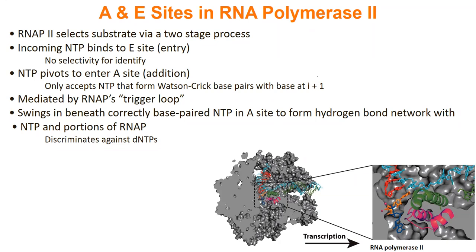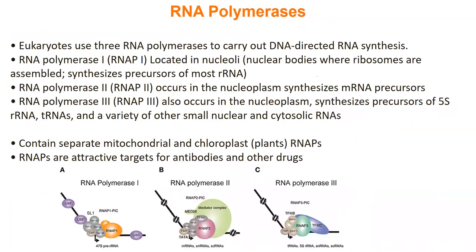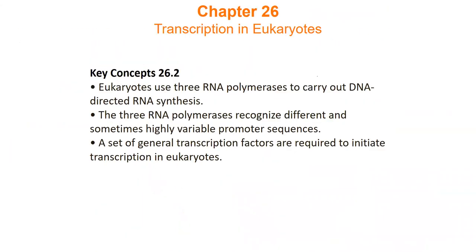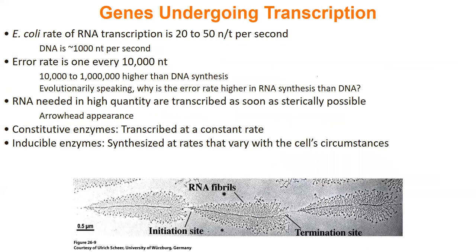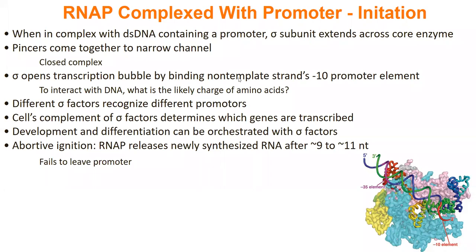Are CpG islands methylated or unmethylated? Both, depending on the signal. CpG islands are located upstream of housekeeping genes. Methylated means the gene is turned on; unmethylated means the gene is turned off. What I'd expect you to know is: what is a CpG island — it's a repeat of C's and G's — and where are they located in the genome, namely upstream of housekeeping genes that are usually always on.